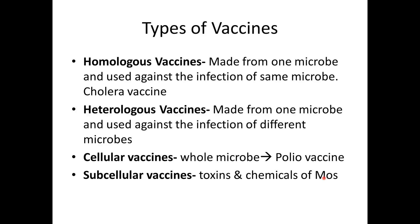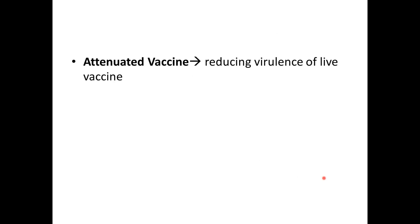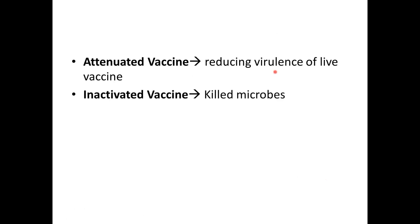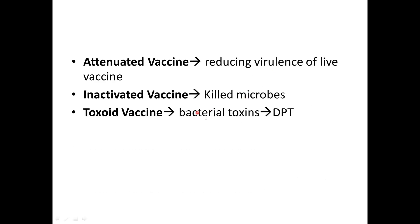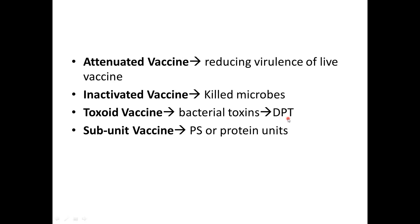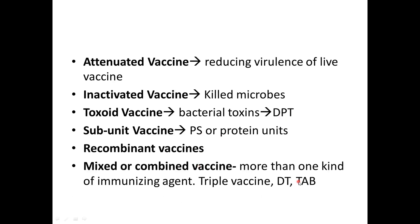The attenuated vaccine is made by reducing the virulence of a live organism. Next, inactivated vaccines contain killed microbes. Toxoid vaccines are basically bacterial toxins — for example, the DPT. Subunit vaccines contain either polysaccharide or protein units. Recombinant vaccines use genetic engineering. Mixed or combined vaccines have more than one type of immunization agent — for example, the triple vaccine and DT-TAB.